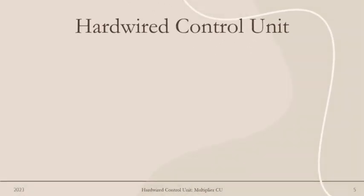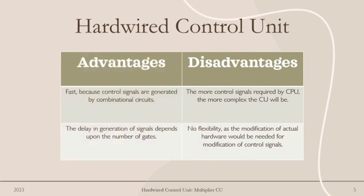Now let us look at the advantages and disadvantages. As an advantage, because control signals are generated by combinational circuits, the delay in generation of signals depends only upon the number of gates.